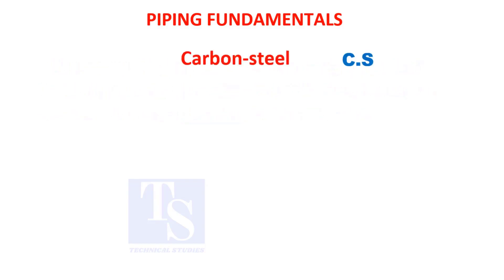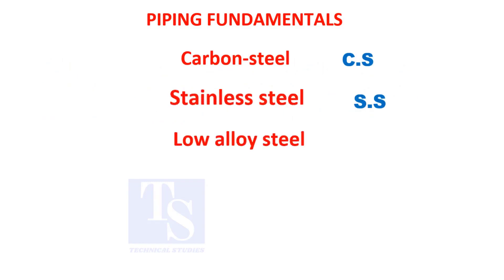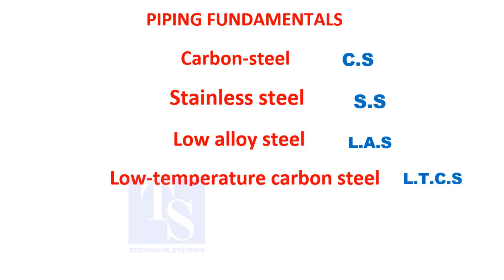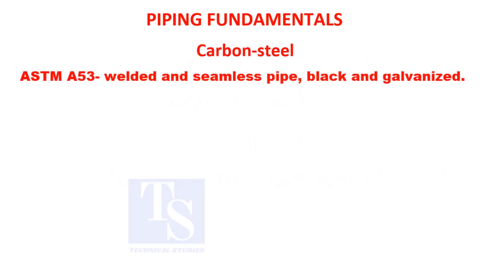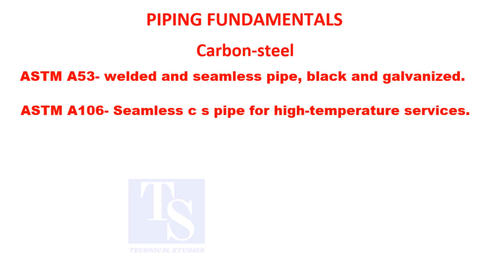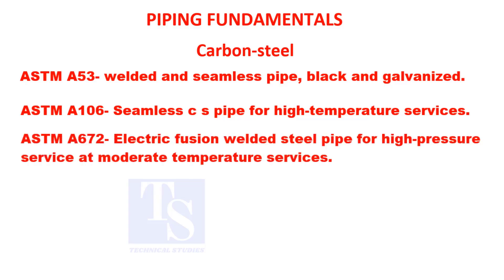Generally used piping materials are carbon steel, stainless steel, low alloy steel, and low temperature carbon steel. ASTM A-53: welded and seamless pipe, black and galvanized. ASTM A-106: seamless CS pipe for high temperature services. ASTM A-672: electric fusion welded steel pipe for high pressure and moderate temperature services.